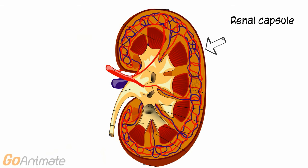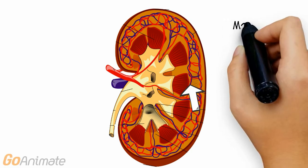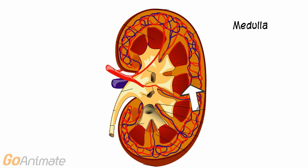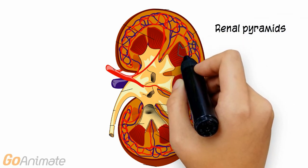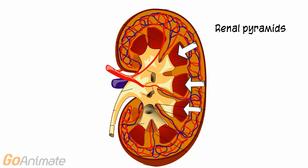Each kidney is surrounded by a tough fibrous outer layer called the renal capsule. The outer portion of the kidney is called the cortex, and the inner portion is called the medulla. The medulla contains large structures called pyramids, where urine formation occurs.